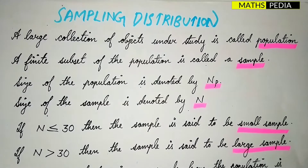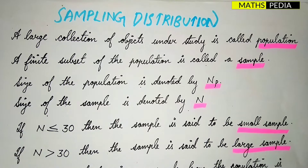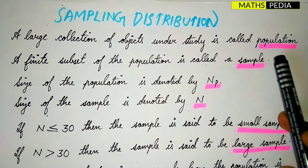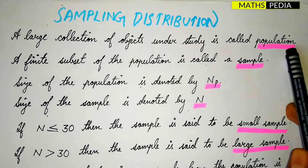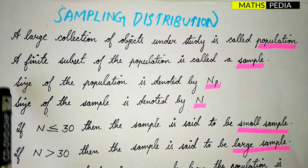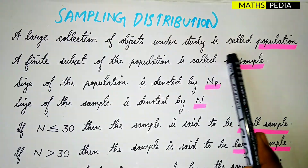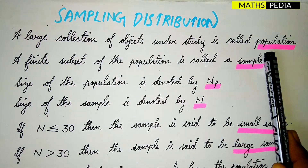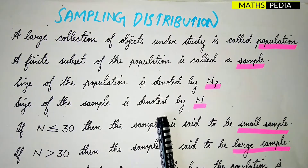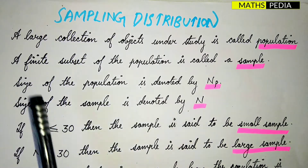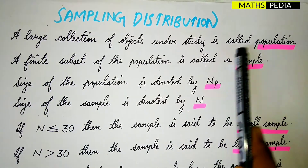In this video we are going to discuss the sampling distribution and every important term related to sampling distribution. Let us start with the first one, that is population. A large collection of objects under study is called population.